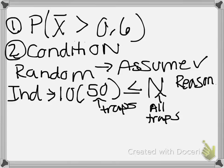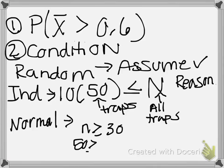Finally, then, after the I is the N, that's the normal condition. Okay. With the normal condition, then, we say N has to be greater than or equal to 30. And 50 is greater than or equal to 30. Our conditions are met. We can then move on to the mechanics.